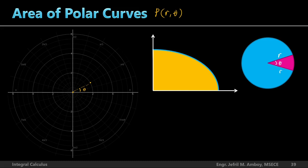What is the area of this sector? We know in geometry that the area of a circular sector is equal to one-half times r squared times theta, where theta is the angle in radians. The angle bounded by the two radii is called the central angle, and in calculation this central angle theta should be in radians. So again, the area equals one-half times the square of the radius multiplied by the central angle in radians.